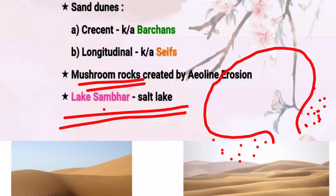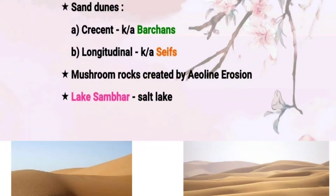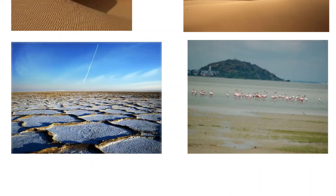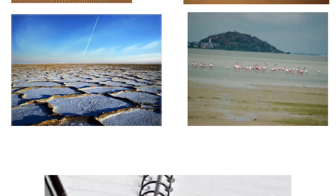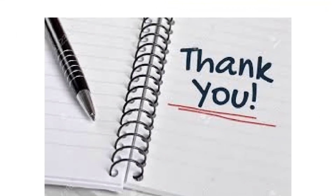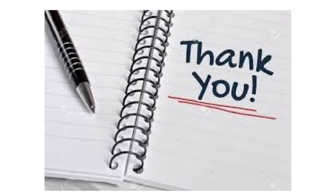Lake Sambar is a very important lake in the Thar Desert — it is a salt lake. Other lakes include Lake Kharagoda and Lake Didwana, among others. Here is a picture of Lake Sambar. That is all for today; hope you have liked the video.